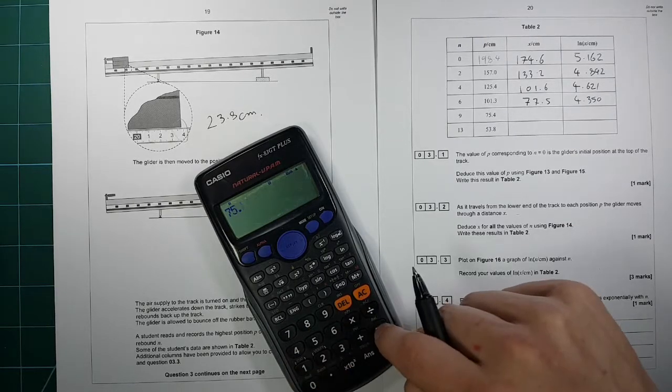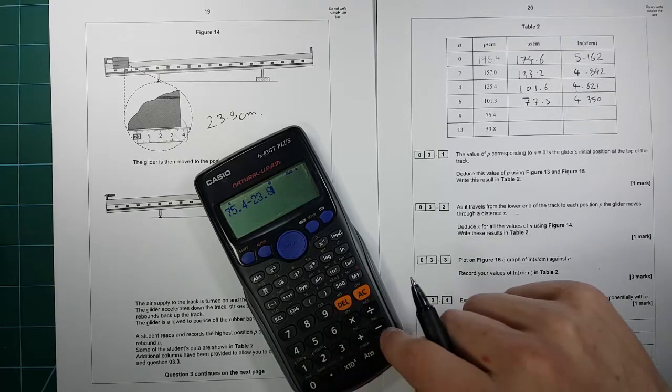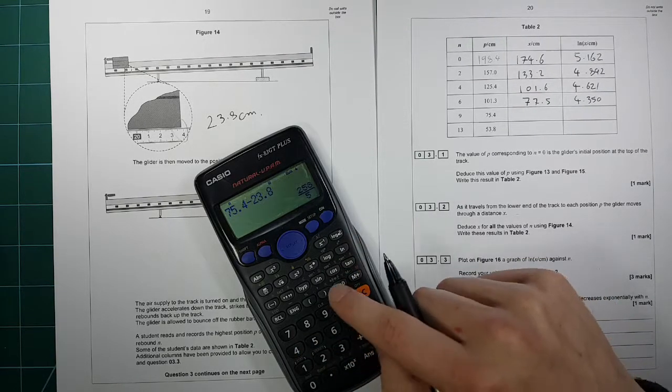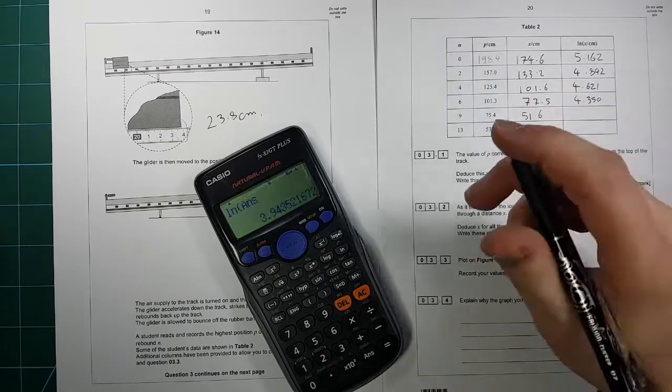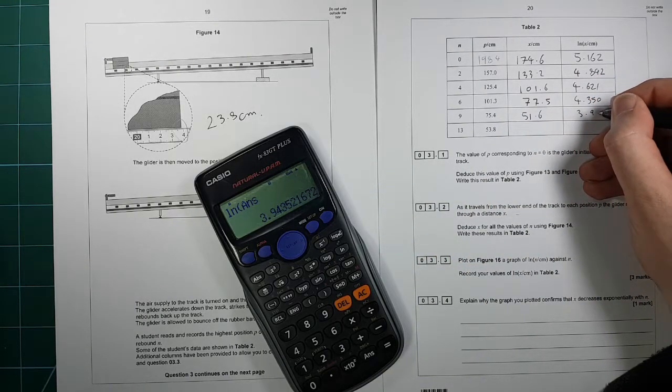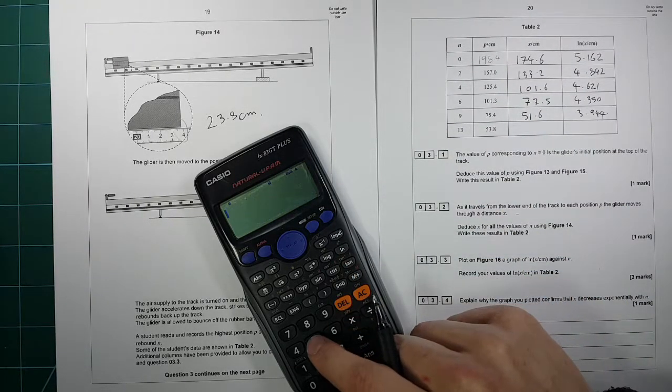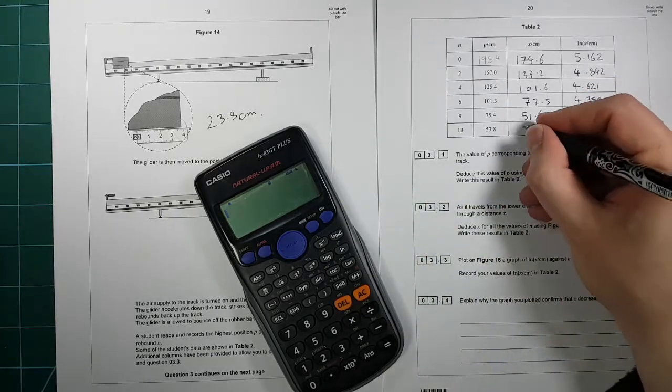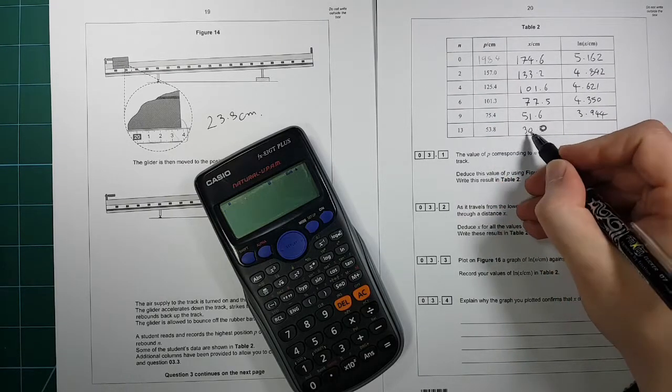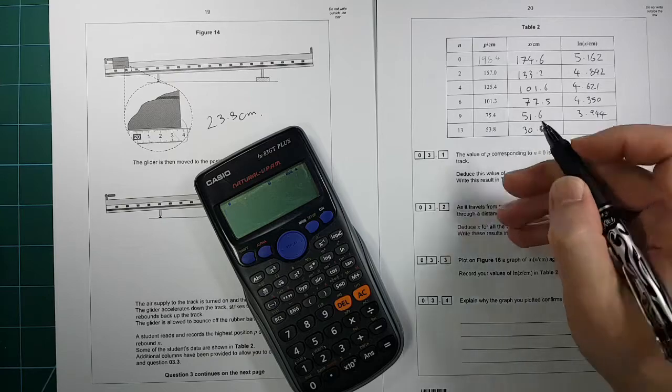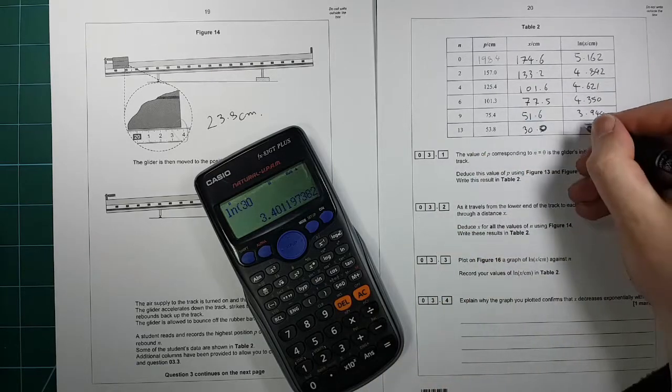75.4, take away 23.8, 51.6. ln of that is 3.94, rounds to a 4. And we've got 53.8, take away 23.8. Make sure you put the 0 in there, just because it will come out as 30 when you calculate it. Don't forget to put the .0 in there. So ln of that is 3.401.